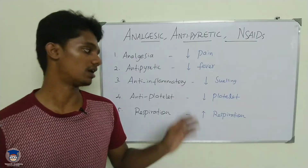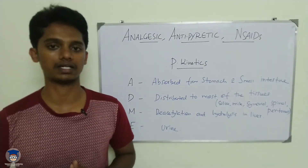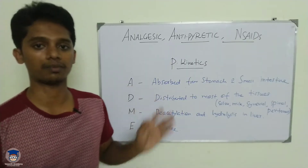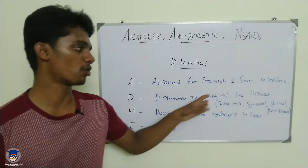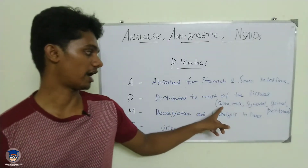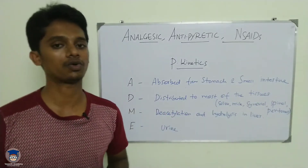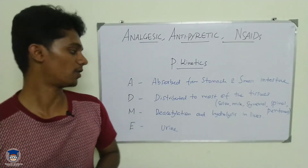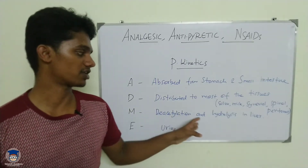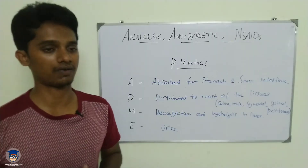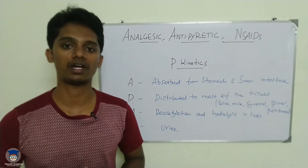Salicylates can stimulate respiration. Regarding pharmacokinetics, aspirin and other salicylates are well absorbed from the stomach and upper small intestine. They are distributed to most tissues and can be found in saliva, milk, synovial fluid, spinal fluid, and peritoneal fluid. Aspirin is rapidly metabolized in the liver by de-esterification and hydrolysis to salicylate, which is finally excreted through urine.